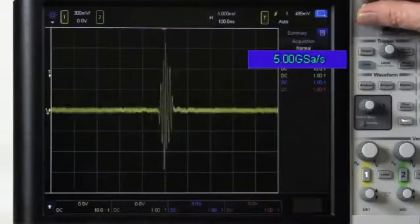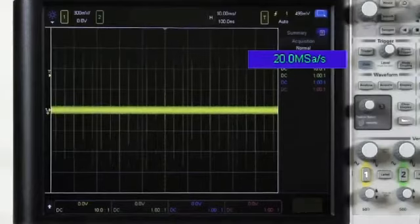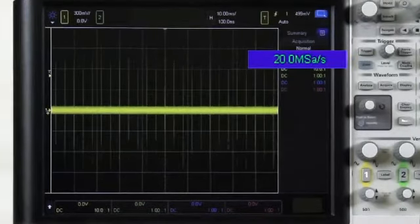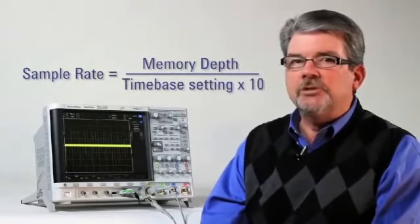To capture more occurrences of this burst, I can increase the time-base setting, but the scope reduces its sample rate to just 20 megasamples per second. Sample rate is a function of the scope's time-base setting and memory depth, which for this scope is 4 million points.